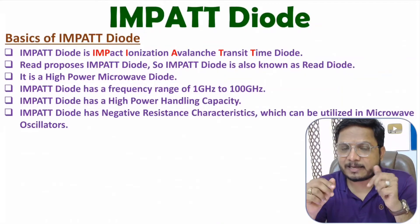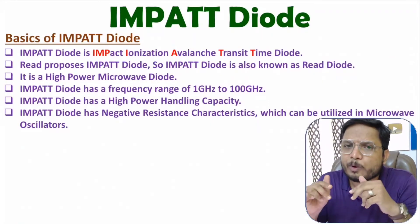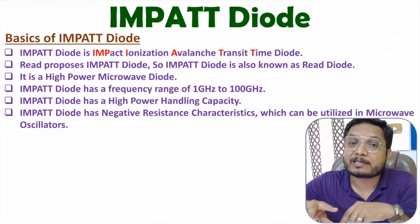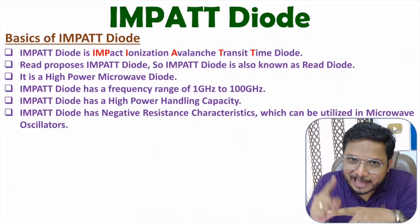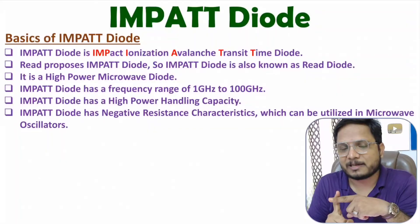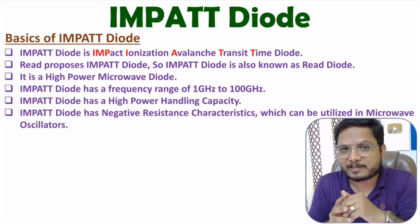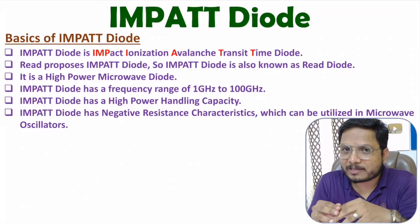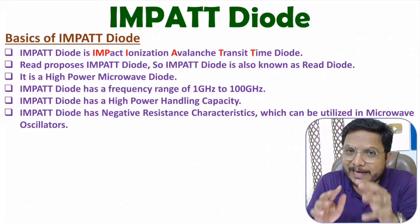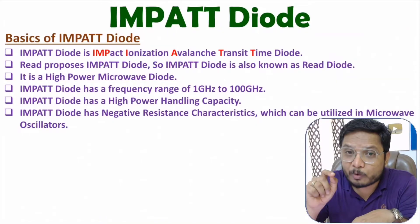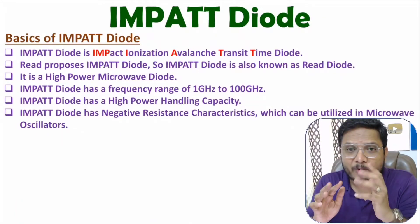The significance of negative resistance characteristics is that it gives lower reverse recovery time, which in turn gives faster switching speed, allowing the diode to be utilized in microwave signals. Like with Gunn diode and tunnel diode, negative resistance characteristics lead to faster switching speed. Similarly, IMPATT diode has negative resistance characteristics giving it lower reverse recovery time for use in microwave signals.